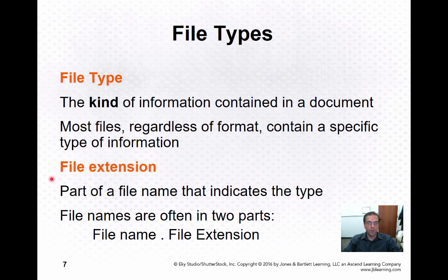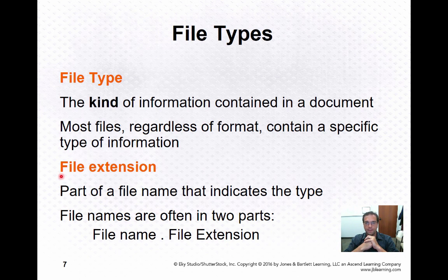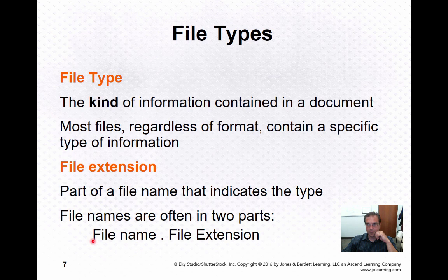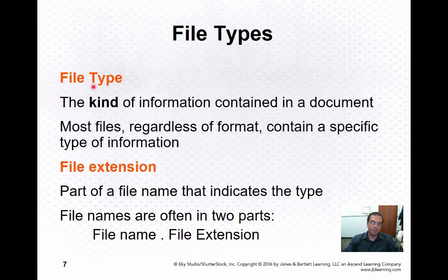The last period of the file name separates something called a file extension from the rest of the file name. The file extension gives you metadata right there in the name, telling you what type of information is stored in the file. There's no universal consensus about whether the name includes the extension or is everything before the period. Another approach used by some systems is called a magic number — for instance, an image file's type might be contained in the first 16 bits of the file's contents.